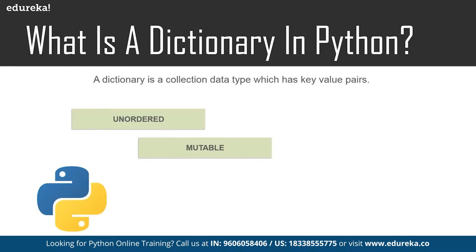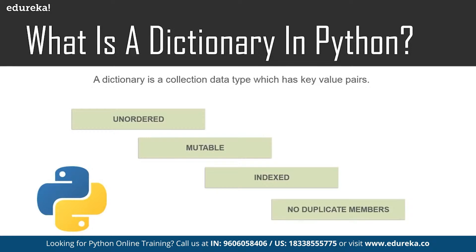Also, it has key-value pairs, which is like a map that we have in other programming languages, and it is indexed as well since the keys are distinct and can be used as indexes to access or change any values in the dictionary. A dictionary does not have any duplicate members as well.